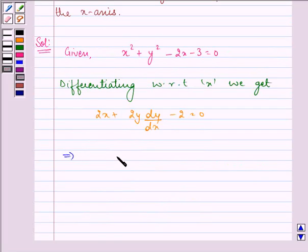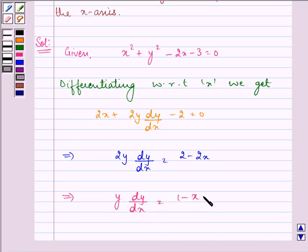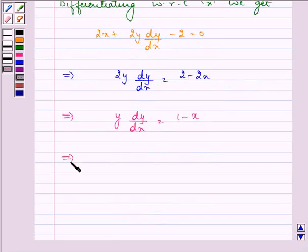This implies 2y dy by dx is equal to 2 minus 2x. This implies y dy by dx is equal to 1 minus x, or we have dy by dx equal to 1 minus x upon y. Here we took 2 common or we divided both sides by 2 to get this.